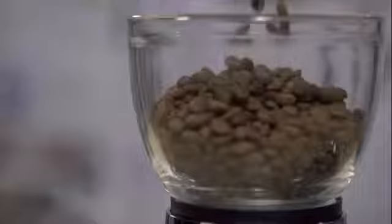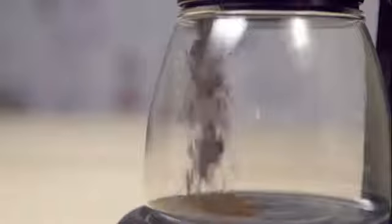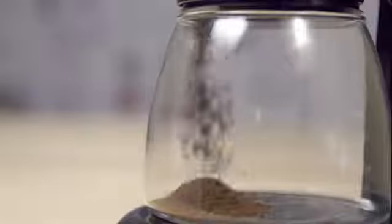Our KitchenAid burr grinder is comprised of a die-cast housing and two grinding plates. We place the bean hopper at the very top with a lid and then we use gravity to pull the beans down through the plates into the bottom grind jar.